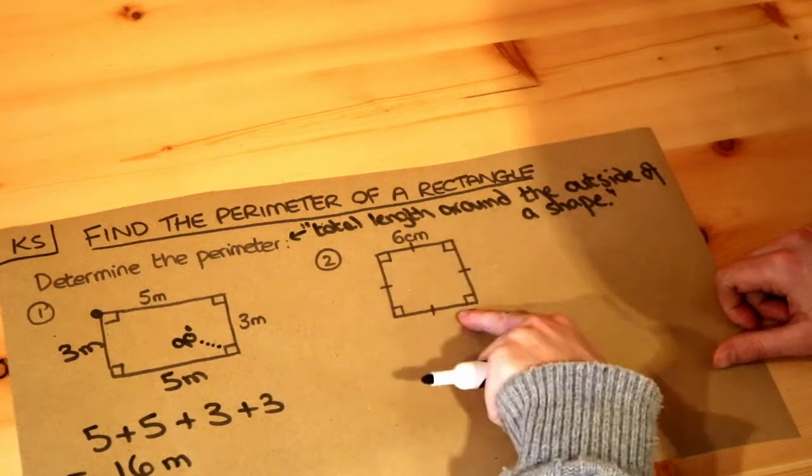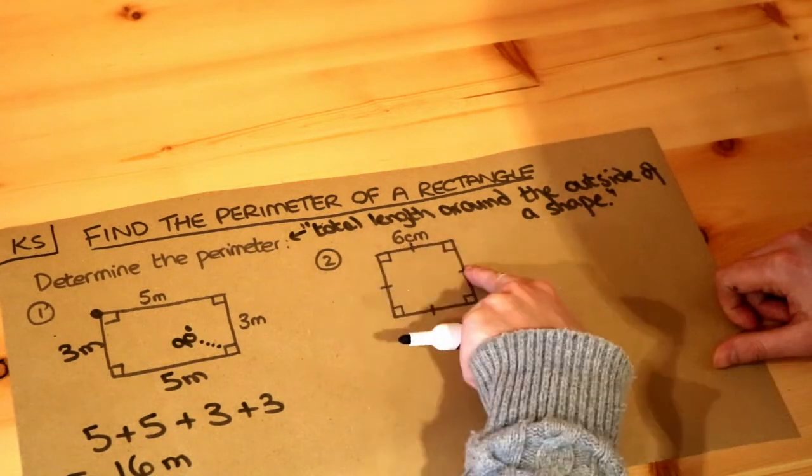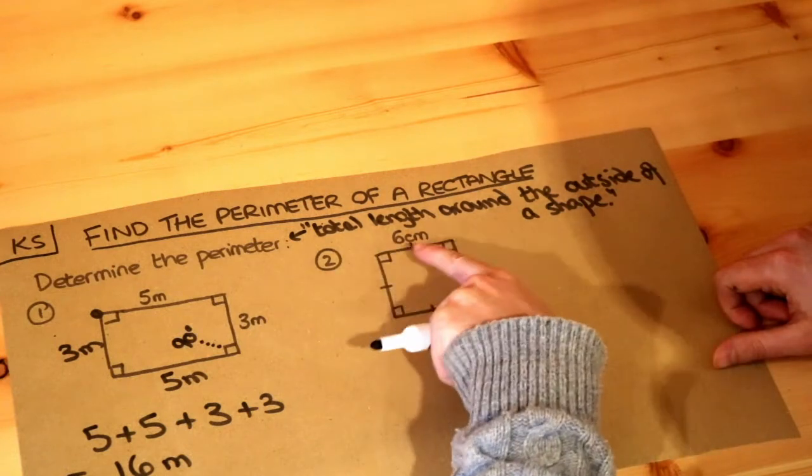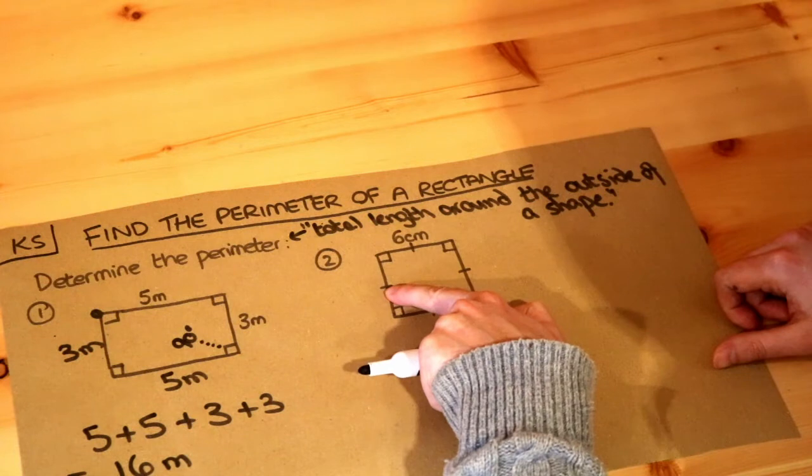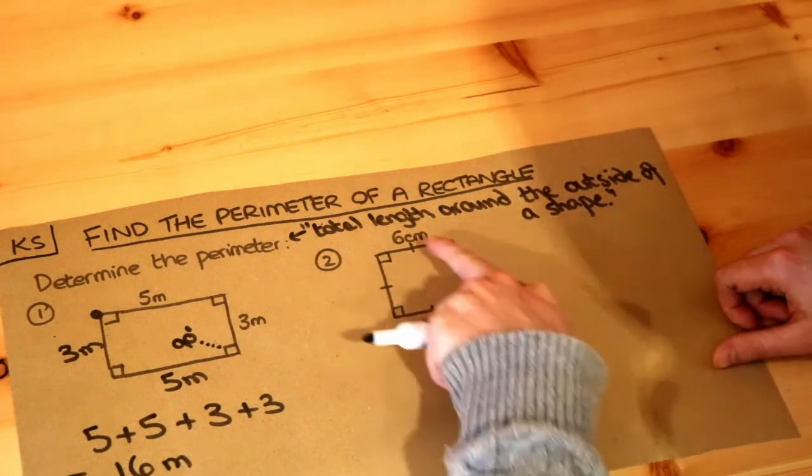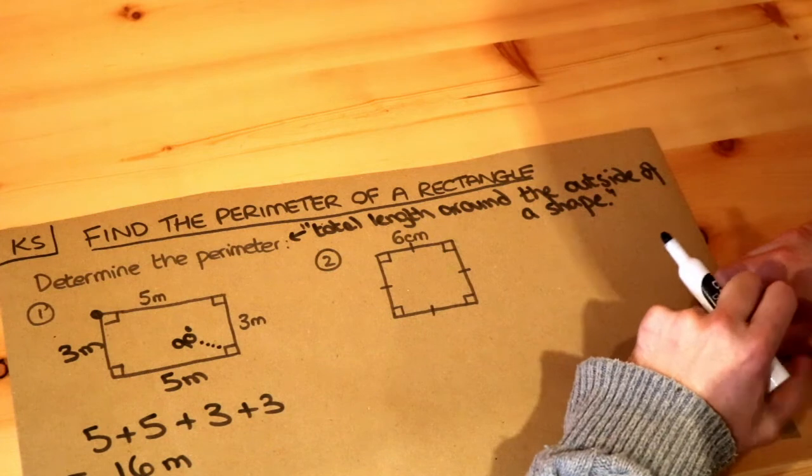And what do these little marks mean? Those marks just mean that each of those lengths are equal. So this is actually a square, because it's saying that this length is equal to this length, is equal to this length, is equal to this length. All the sides are the same length because they have that little mark on them. So it's a square.